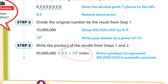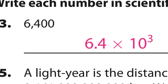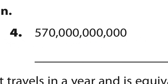Now it's your turn. Pause the video and try to answer numbers 3, 4, and 5. The first answer is 6.4 times 10 to the 3rd — you place the decimal right there, that's the only way to get a number from 1 to 10, and you move it 1, 2, 3 times, so it's to the 3rd power. The next one: place the decimal to get 5.7, then move it 1, 2, 3, 4, 5, 6, 7, 8, 9, 10, 11 times — so 5.7 times 10 to the 11th power.